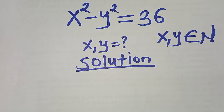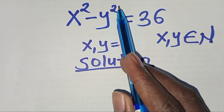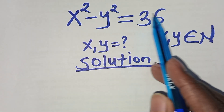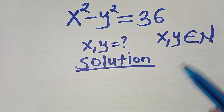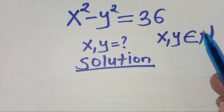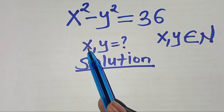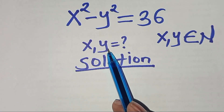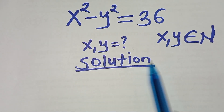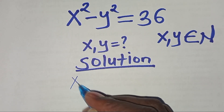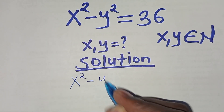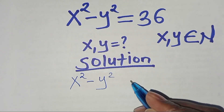Hello everyone, welcome. We are given the algebra problem: x squared minus y squared equals 36, where x and y are elements of the natural numbers. What is the value of x and y?